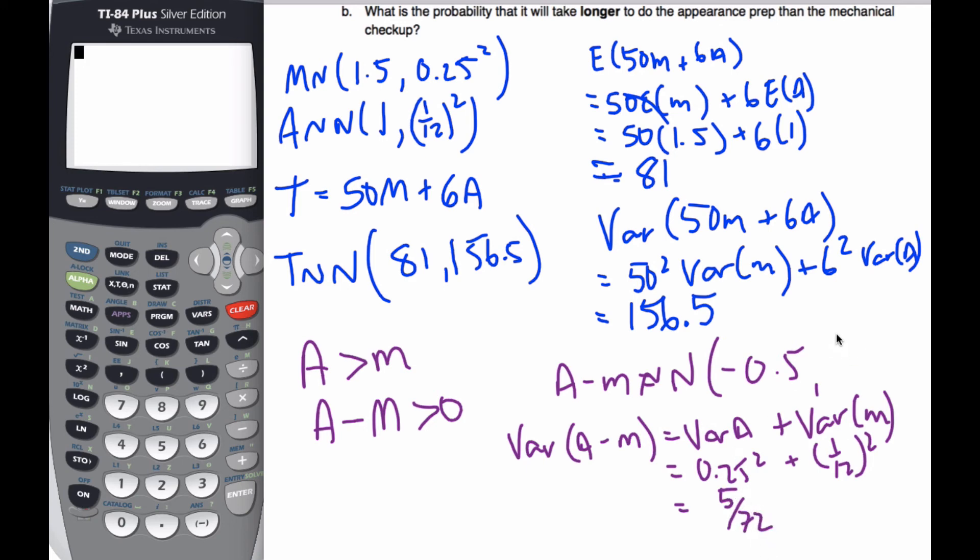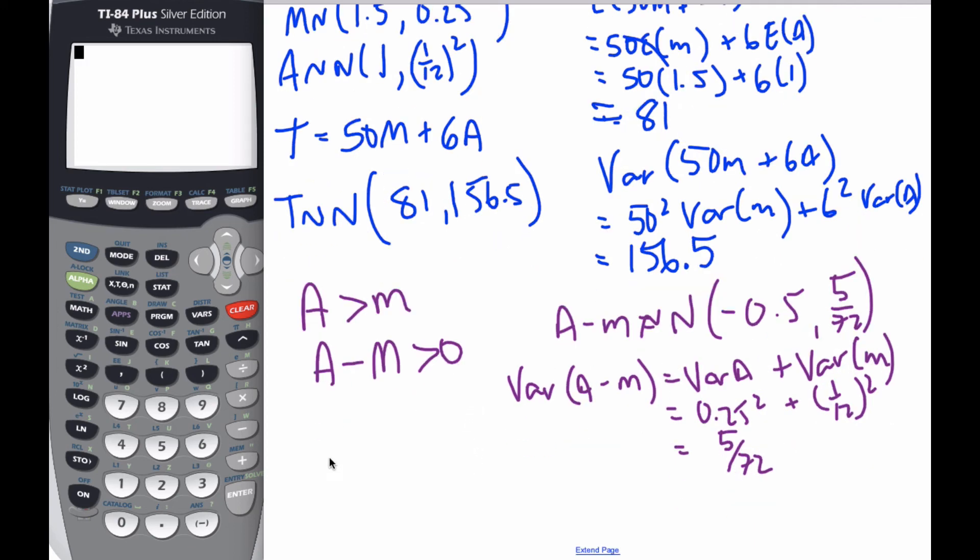So it is definable as such. A minus M is normal with a mean of this, a variance of that. And I want to actually find the probability now that A minus M is bigger than 0.